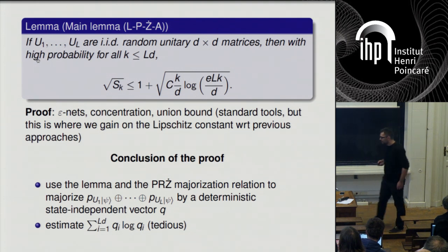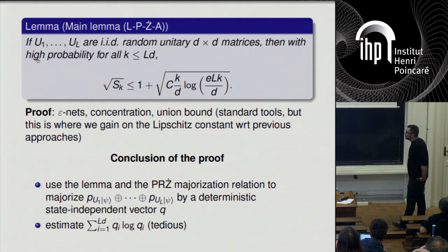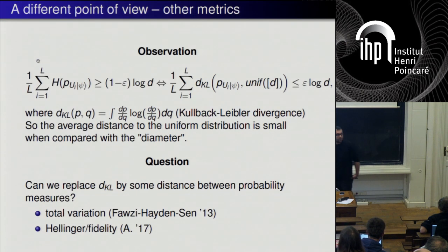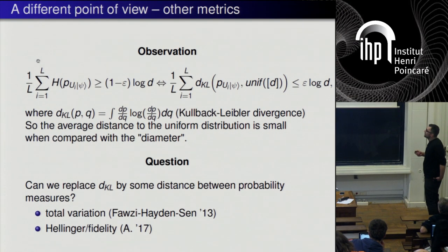That was the entropic uncertainty principle. Now let me pass to metric uncertainty principles, which requires a slight change of perspective. Let's replace the bound (1 - 1/L) log d with epsilon and ask: given epsilon, how many matrices do we need so that the average entropy per measurement exceeds (1-ε) log d, independently of the chosen state? Disregarding additive constants, the previous result tells us that L is roughly 1/epsilon.